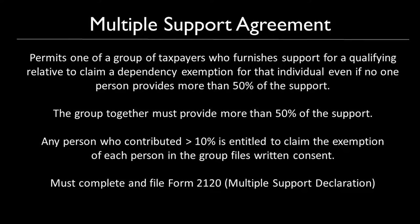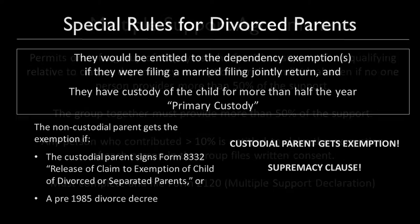The joint return test and citizenship test for the qualifying relative are the same as for the qualifying child. A multiple support agreement permits one of a group of taxpayers who furnishes support for a qualifying relative to claim a dependency exemption even if no one person provides more than 50% of the support. The group together must provide more than 50%, and any person who contributes more than 10% is entitled to claim the exemption if each person files written consent using Form 2120, a multiple support declaration.